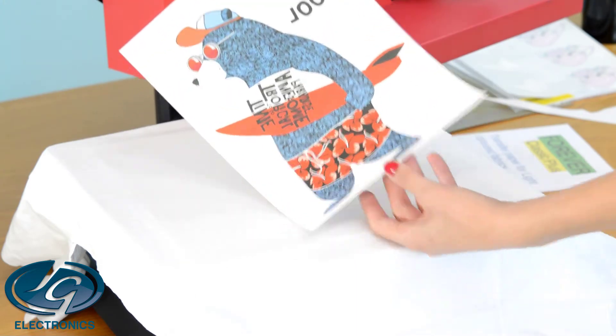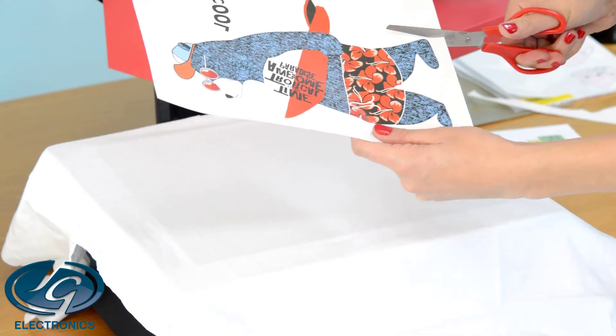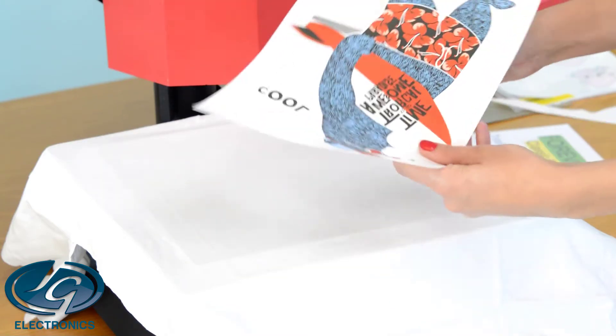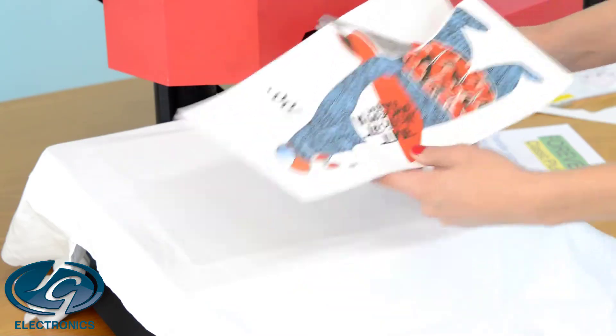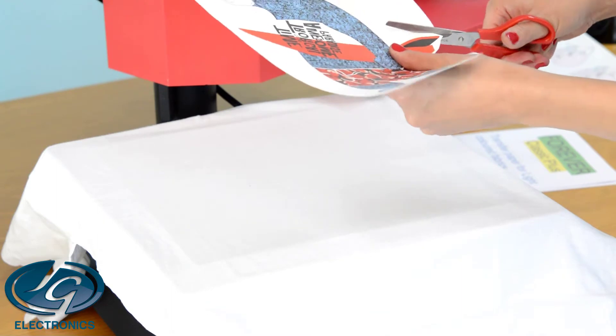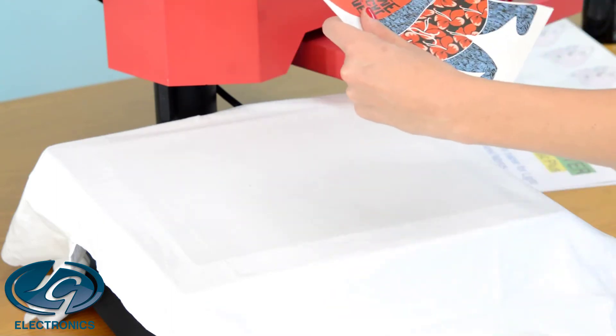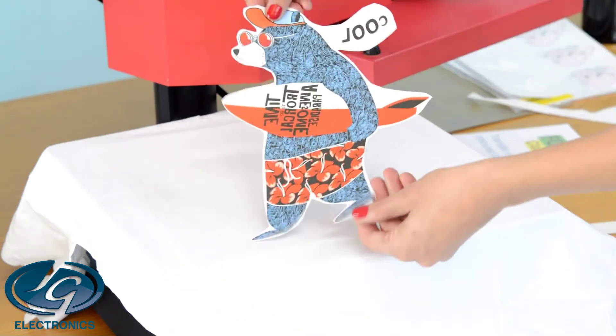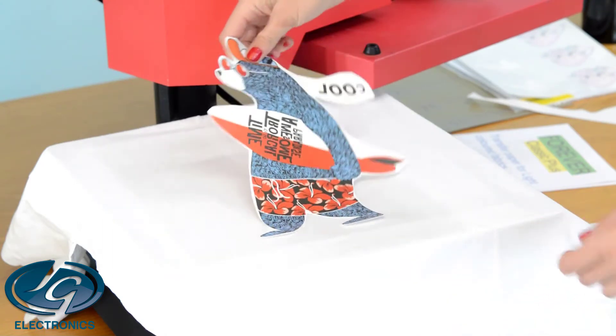Cut your picture as close as possible to the edges. Remove all white unprinted areas - this is to avoid too much glue on your t-shirt. Put it face down.